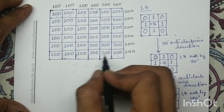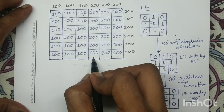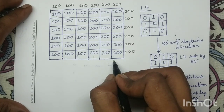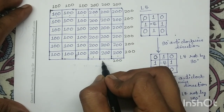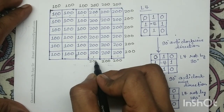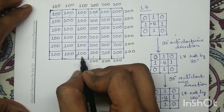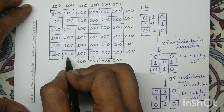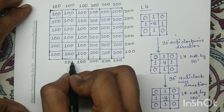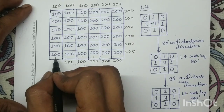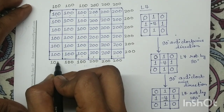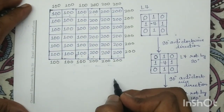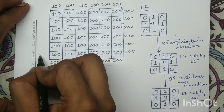Along this side, three border pixels have the intensity value 200, so I write 200 here. Similarly, border pixels with intensity value 100 are filled in at their respective positions. Along the bottom side, all border pixels have the intensity value 100, so I write 100 there.